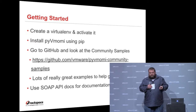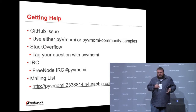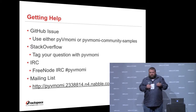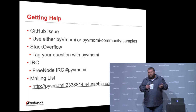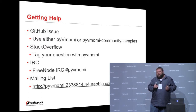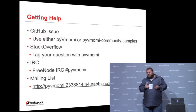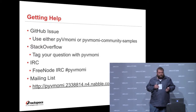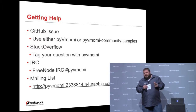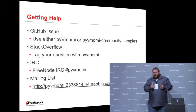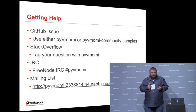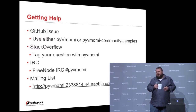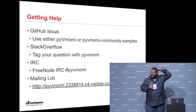If you get stuck, where do you go for help? You can open a GitHub issue — pick your project, either the PyVMomi community samples or the PyVMomi page itself. Just open your issue, ask your question, and someone will come along eventually and answer it. You can also go to Stack Overflow, ask your question there, and tag it with PyVMomi. I'm pretty active on the PyVMomi threads on Stack Overflow — at least once or twice a week I go in and answer all the unanswered questions.